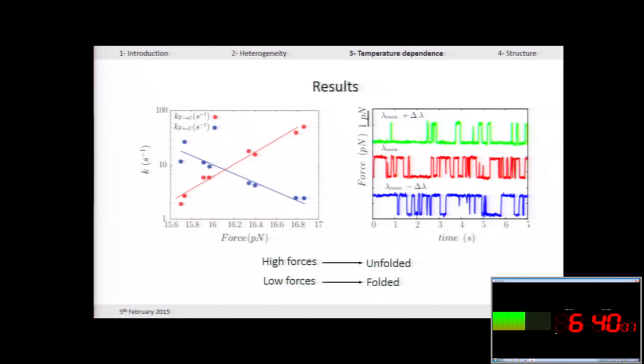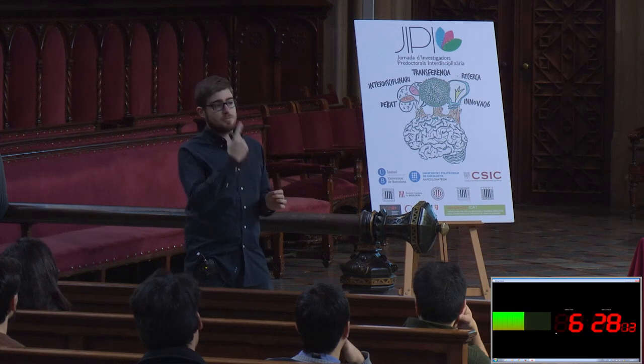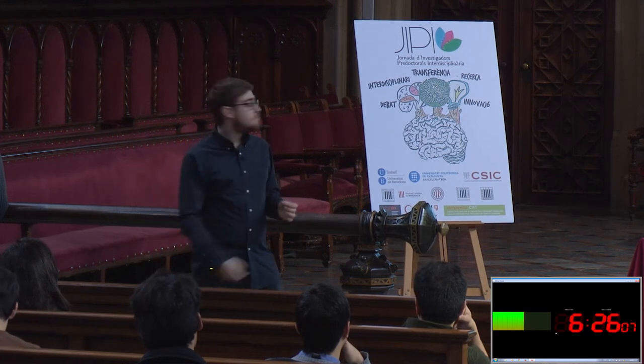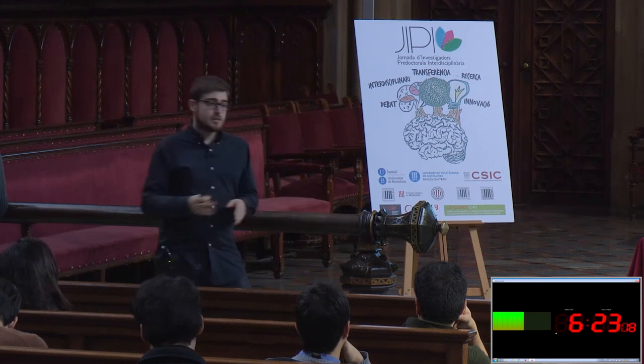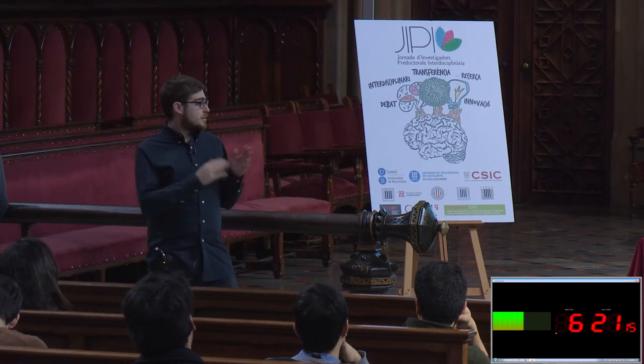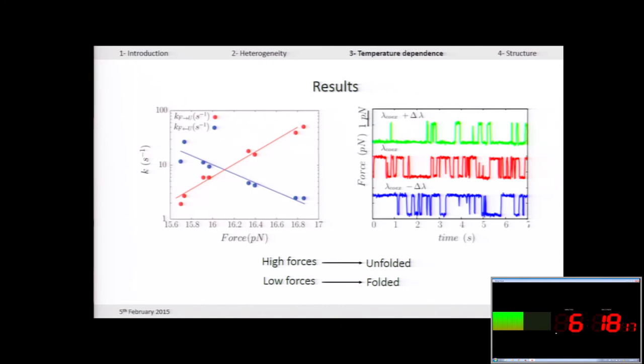So, changing this distance that we call lambda, we can favor the folded state or an unfolded state. If we increase the distance, we favor the unfolded state, because it's the same as if we increase the distance from the nose of the sheep to the tail. As you can see, we can study also the kinetics involved in each transition at different exerted force, and at a certain value of the force, we can see that these kinetics cross. This force is called the coexistence force, and in these conditions, we can find the molecule folded or unfolded with the same probability.